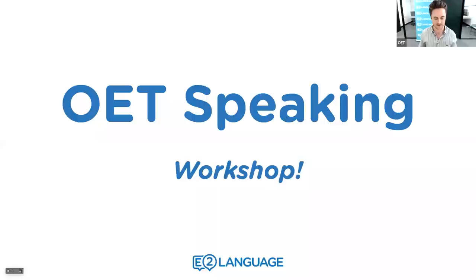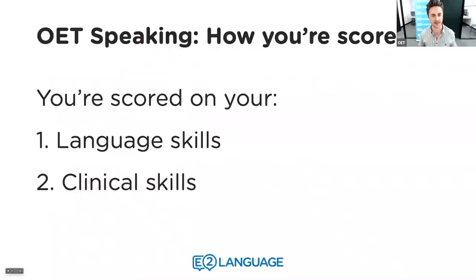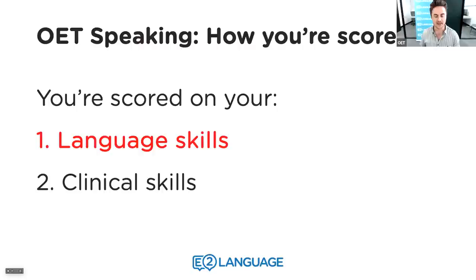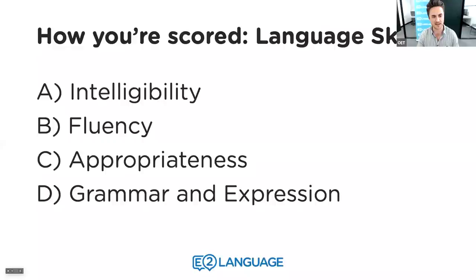Conversely, if you do communicate according to the criteria, you'll get a high score. There are two elements you'll be scored on: linguistic skills and communicative skills. The way you're scored in OET speaking is on language skills and clinical skills.